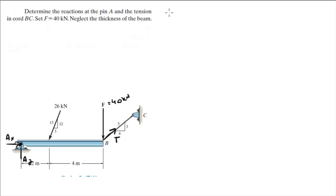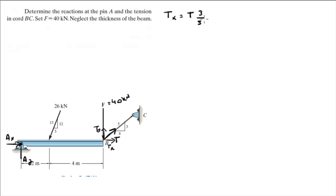Let's find the tension first — it should be easy to find. The tension has a Y component and an X component: TX is equal to T times 3/5, and TY is equal to T times 4/5. Keep that in mind.